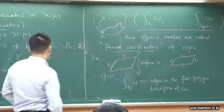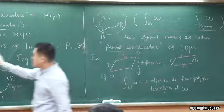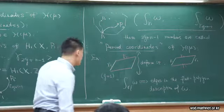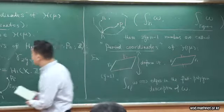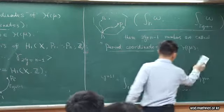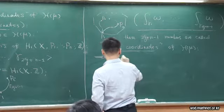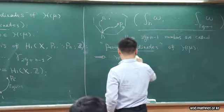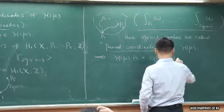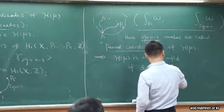This quickly tells us a nice corollary. We know how many there are — there are exactly 2g+n−1 period coordinates. That tells us this space H_μ can be regarded as a 2g+n−1 complex-dimensional manifold. As a consequence, H_μ is a smooth complex manifold of complex dimension equal to 2g+n−1.